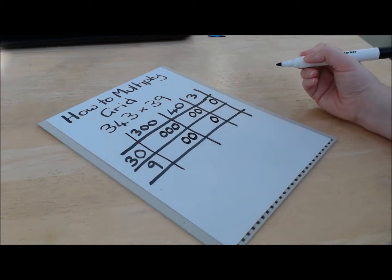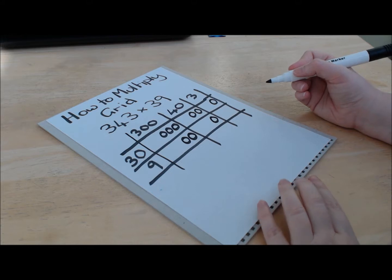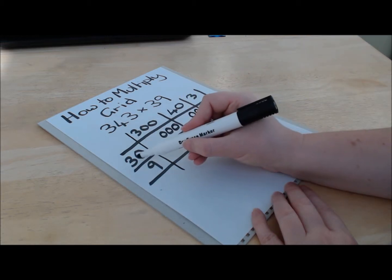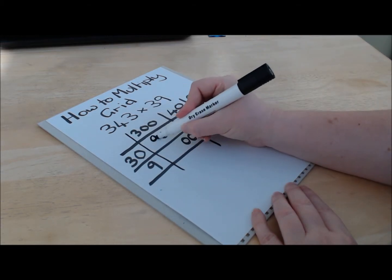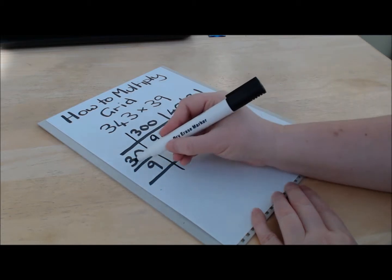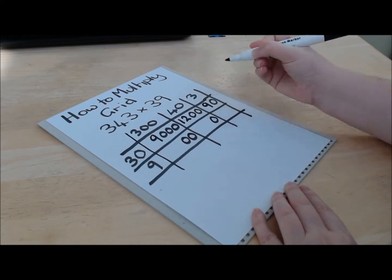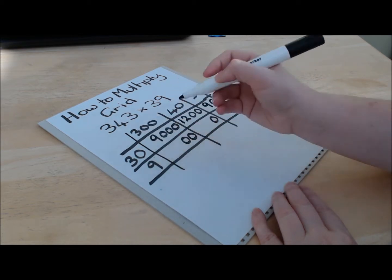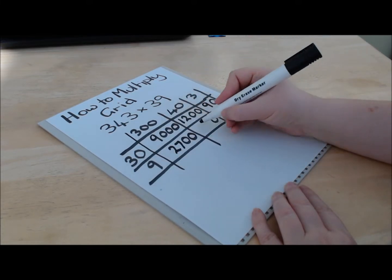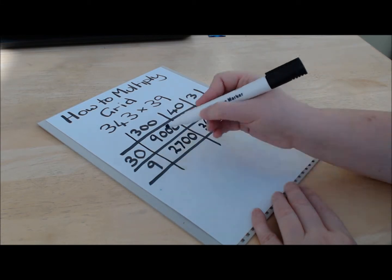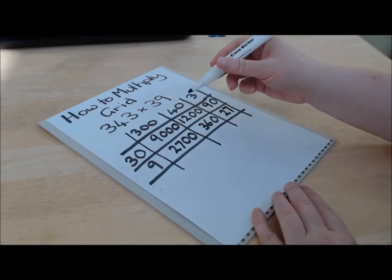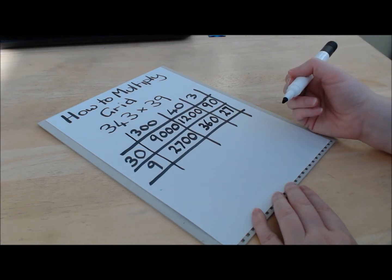There are no zeros to go in the last box. So now we can go back and ignore the zeros and just multiply the numbers. For this first one it's 3 times 3 which is 9. Here we've got 3 times 4 which is 12, and then 3 times 3 again to make 9. For this one we've got 3 times 9 which is 27, 9 times 4 is 36, and then 9 times 3 which makes 27.